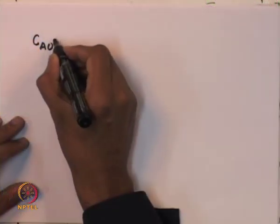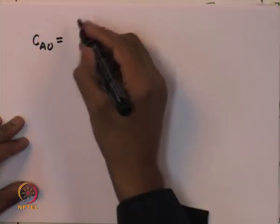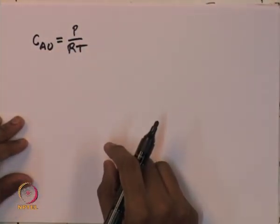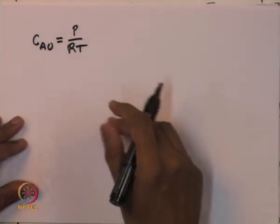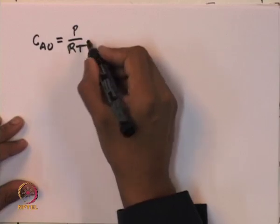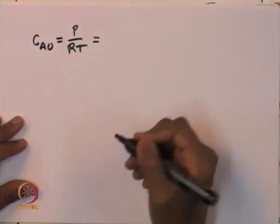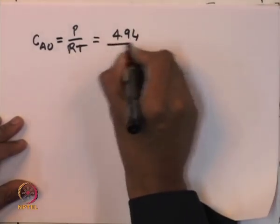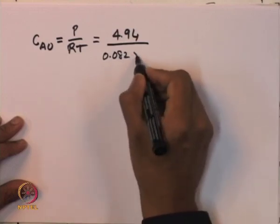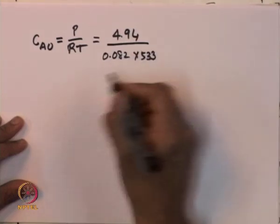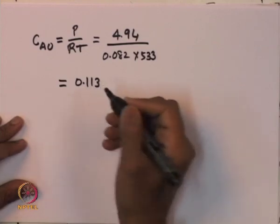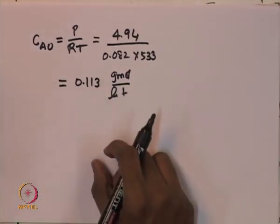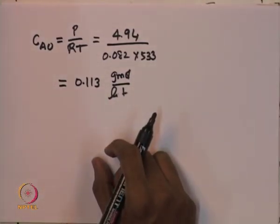The first step is to find out the concentration with which the fluid is actually flowing into the reactor. C_A naught, the inlet concentration, is equal to P divided by RT - that is the pressure divided by the gas constant R multiplied by the temperature at the inlet. That is given by 4.94 divided by 0.082 into 533, which comes out to be about 0.113 gram moles per liter.